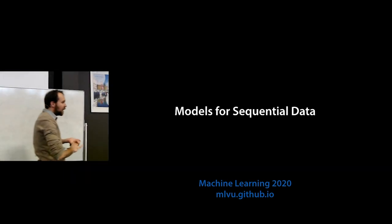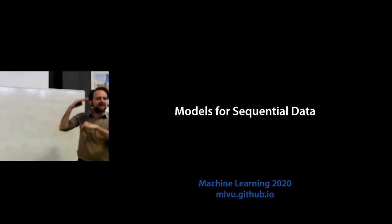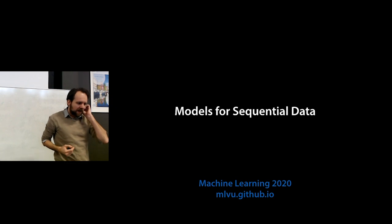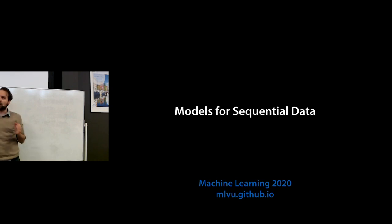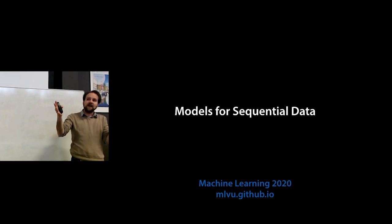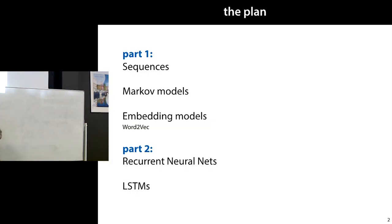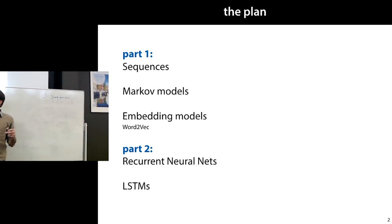Good afternoon. Today's lecture will be on models for sequential data. We've seen a lot of machine learning models for basically tables of instances, where we assume — without maybe making it that explicit — that all the instances are independently sampled. Now we're going to look at how to approach this problem if your instances have a very clear ordering in time, if they are a sequence.